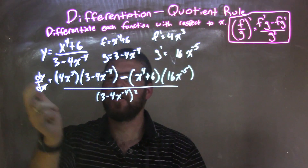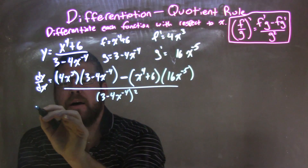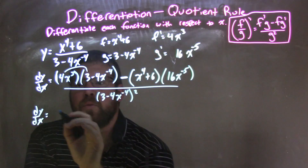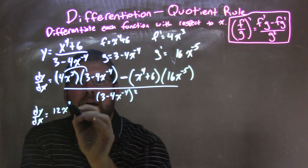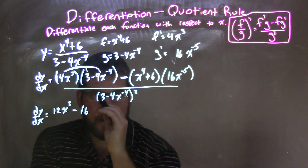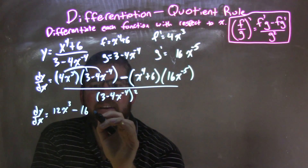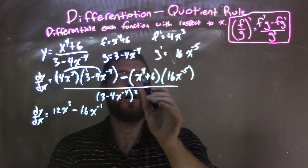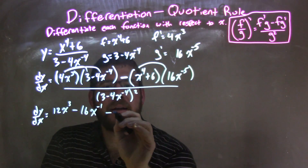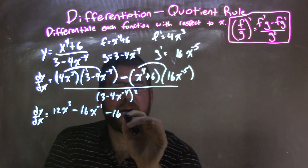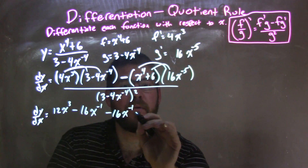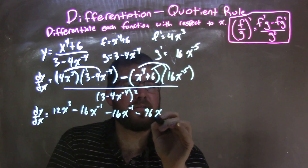So now let's simplify. We've done our calculus and taken our derivative. Distribute the 4: 4 times 3 is 12, and distributing x to the 3rd — 4 times 4 is 16, and adding exponents 3 plus negative 4 gives x to the negative 1. Now dealing with the minus term: x to the 4th times 16x to the negative 5th gives minus 16x to the negative 1, since 4 plus negative 5 is negative 1. And 6 times 16 is 96, so we have minus 96x to the negative 5th.